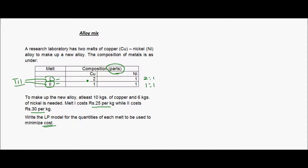Let's understand the composition of melt one, which has copper and nickel in the ratio two is to one. If we divide melt one into three equal parts, two parts are copper while one part is nickel. So for melt one, two parts are copper and one part is nickel.